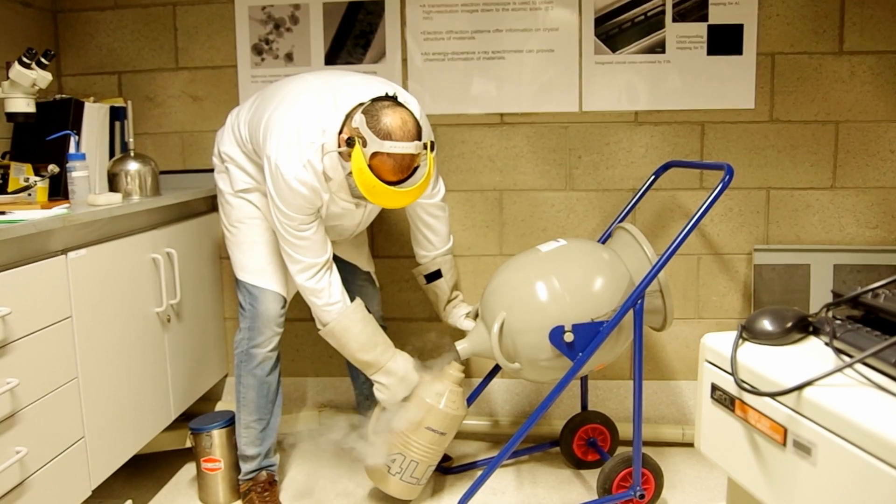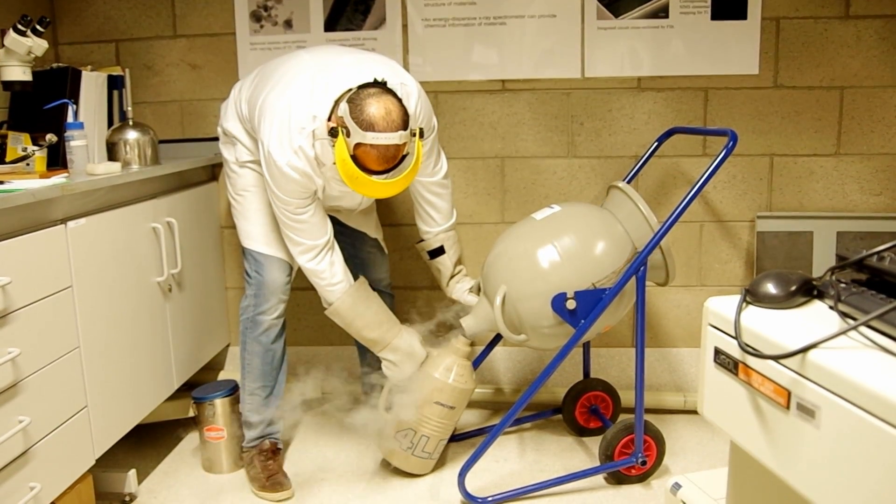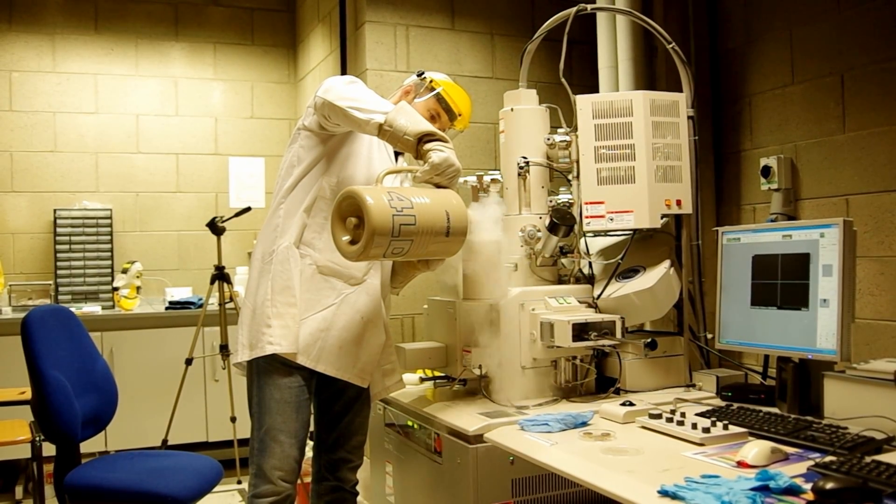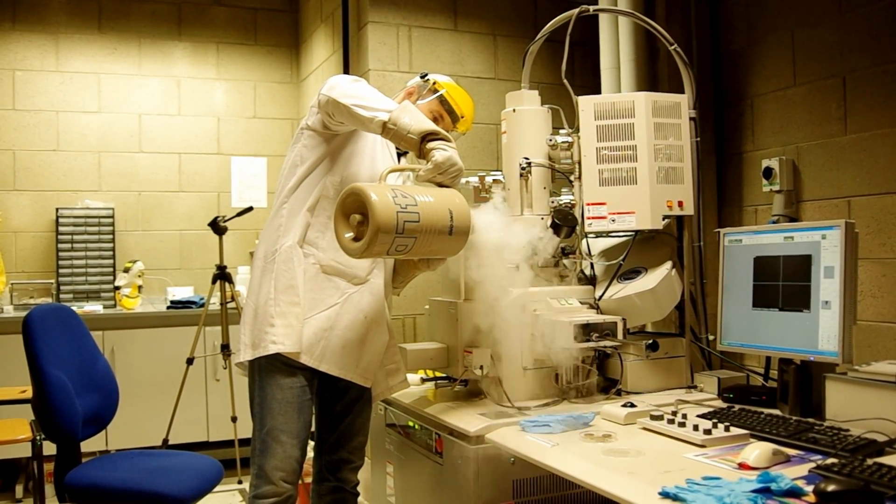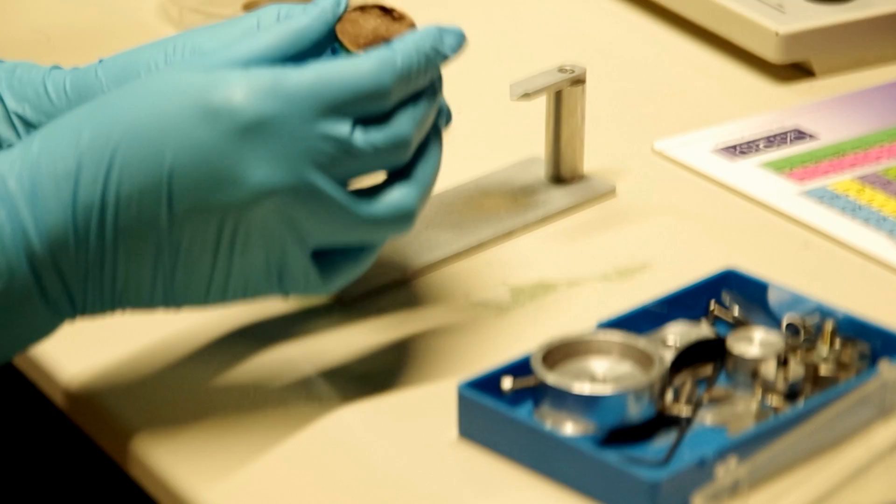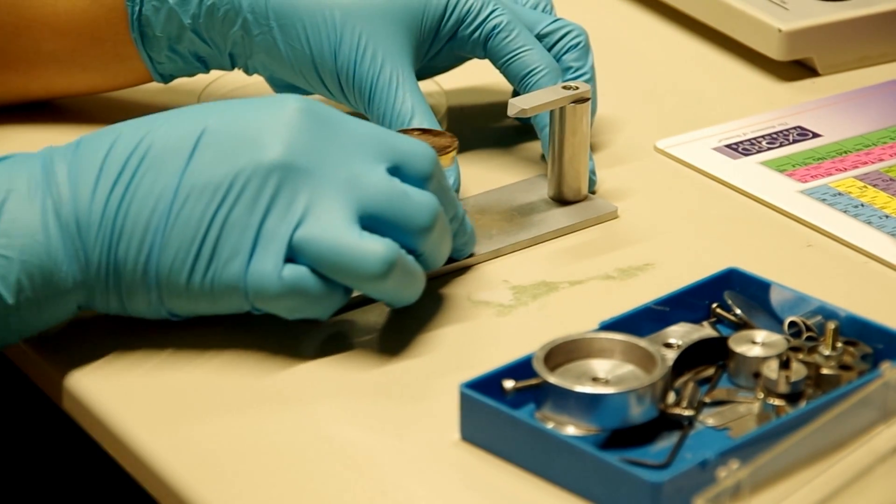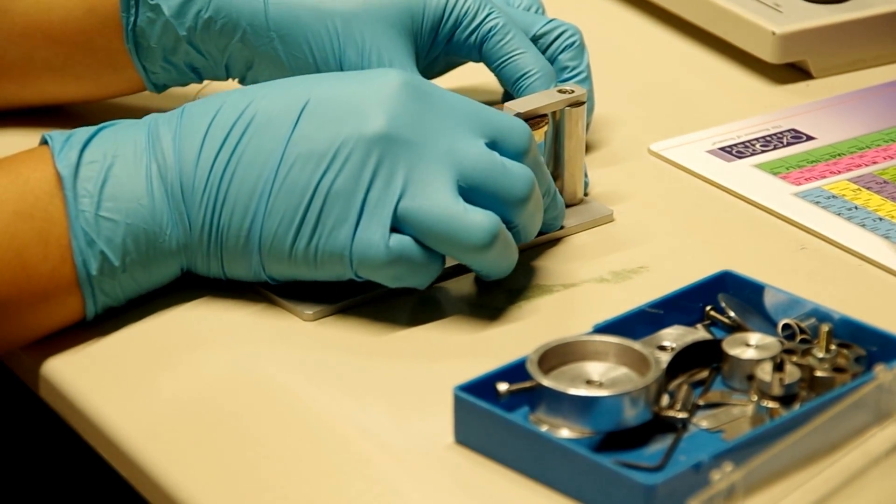Liquid nitrogen is refilled and poured into the liquid nitrogen chamber to cool down the detector, as to reduce the background noise detected. The specimen is screwed onto the sample base and measured with sample gauge to ensure the sample height is standard.